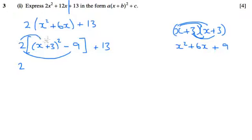So 2 times this whole term here is going to just be 2 times the bracket. And then I'm also going to have my 2 times my minus 9, which is negative 18. And I've still got that plus 13 tagged on the end.